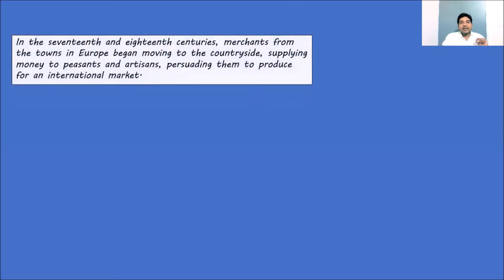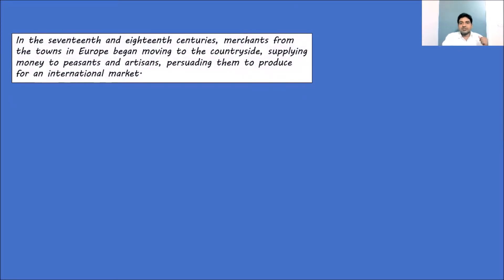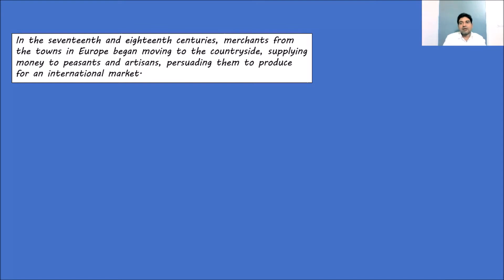In the 17th and 18th centuries, merchants from towns in Europe began moving towards the European countryside. They moved towards the countryside to supply money to peasants and artisans and persuade them to produce for the international market. But why did they move to the countryside instead of producing in the towns?